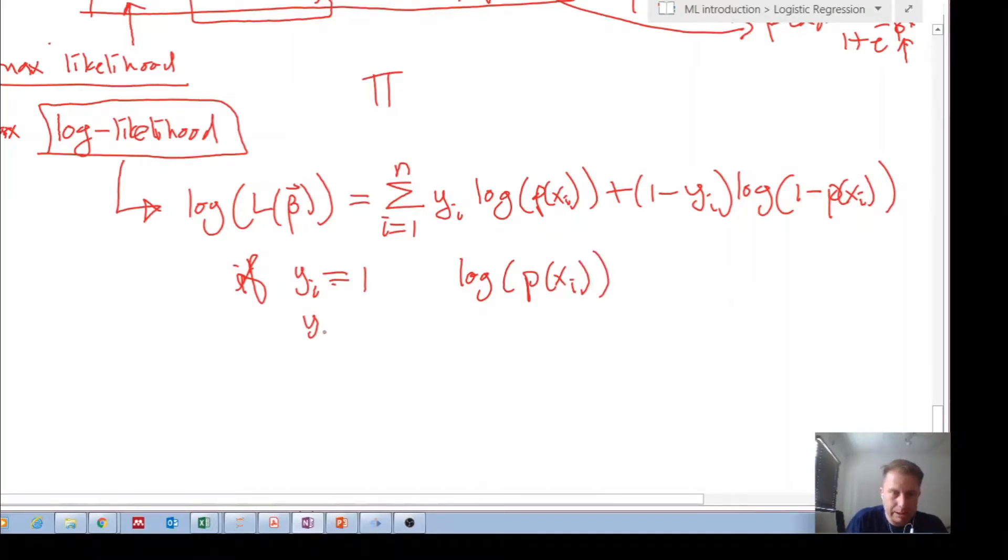If y equals 0, then you can see this guy falls away and we're left with log of 1 minus the probability of x, of whatever that x was. And so we're still trying to maximize this. Remember, inside this probability function are our parameters b0, b1, and however large your parameter space was.